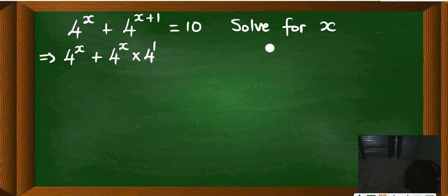Then after that, what you are going to see here is that you have a common factor here, 4 to the power x, 4 to the power x, so you factor it out.